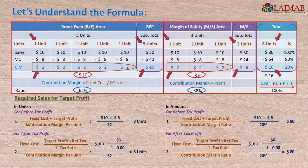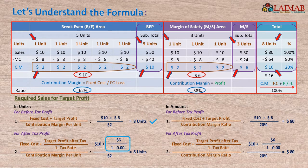Now, the important part: to find the required sales for target profit. If we want to achieve profit, we have to recover fixed cost first by contribution margin. Therefore, fixed cost $10 and profit $6 have to be achieved by contribution margin per unit, giving a result of 8 units. If targeted profit is after tax, then after-tax profit needs to be converted to before-tax profit by dividing by (1 minus tax rate). In this example there is no tax, so the result is the same. For amount, use the contribution margin ratio, which results in $80 for both formulas.